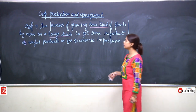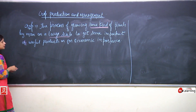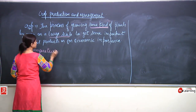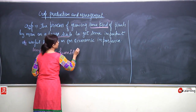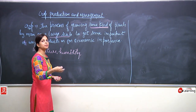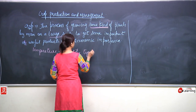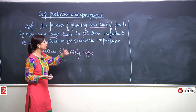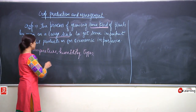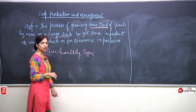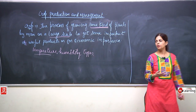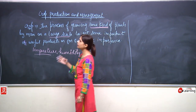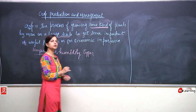On the basis of certain factors, crops can be divided into many types. It can be on the basis of temperature, humidity, or the type — maybe cereals, pulses or dals, vegetables, oilseeds, beverages. The crops can be further divided into many types on the basis of temperature and humidity.